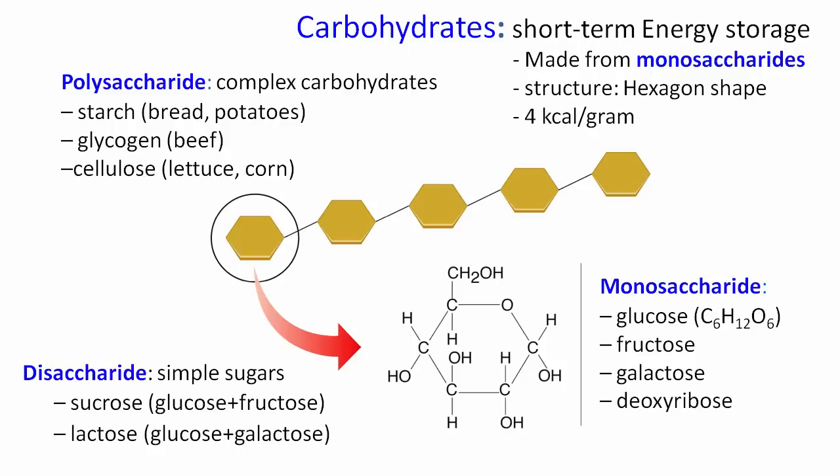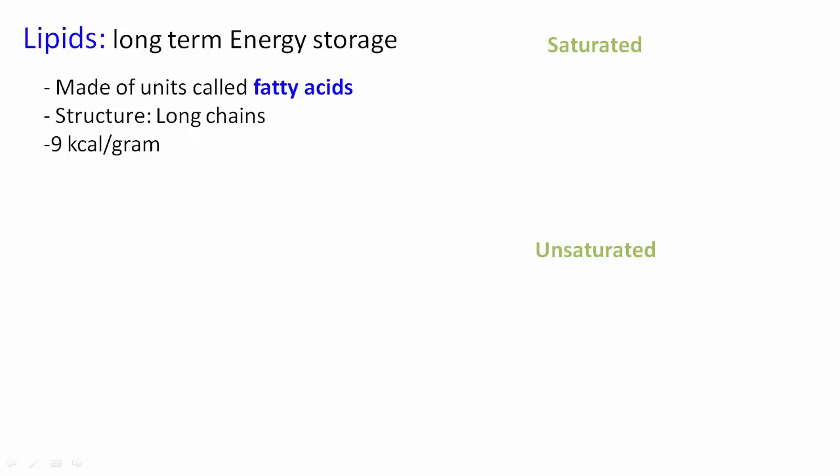The second major macromolecule are lipids. If carbohydrates are short-term energy storage, then lipids are long-term energy storage. They're made from little units called fatty acids—that's the monomer. Their structures are rather long chains, and these contain 9 kilocalories per gram, so over double the amount of energy than carbohydrates.